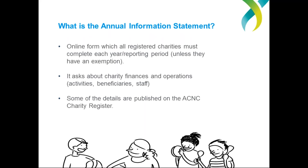We use the info we get in a variety of ways. It informs the ACNC's work to ensure charities are complying with their obligations and doing the right thing, which in turn ensures public trust and confidence in the sector remains high. It's also used to compile studies like our annual Australian Charities Report, to help streamline reporting to different state, territory and federal regulators, and to cut duplicate reporting and red tape — in line with one of the objects of the ACNC Act. We also publish some of the info gained on each charity's listing in the ACNC Charity Register.